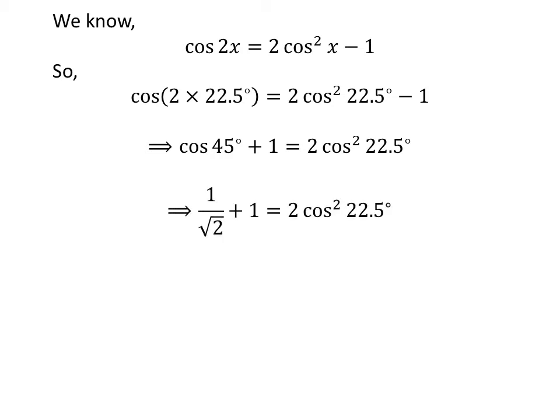We know the value of cosine of 45 degrees is 1 upon square root of 2. So, 1 upon square root of 2 plus 1 is equal to 2 times square of cosine of 22.5 degrees.